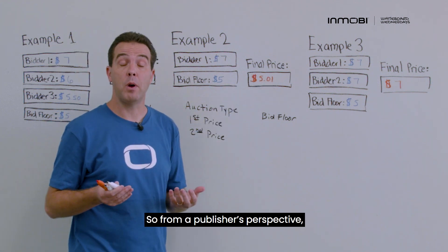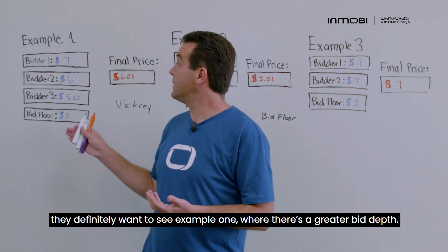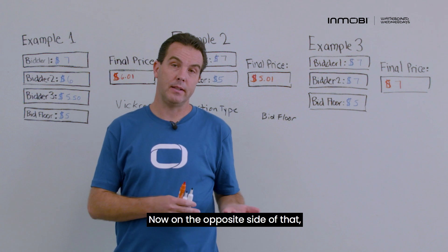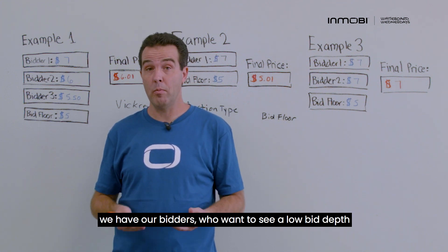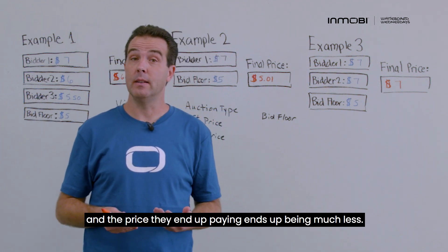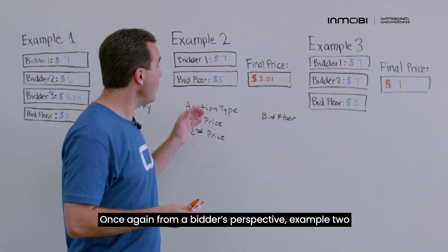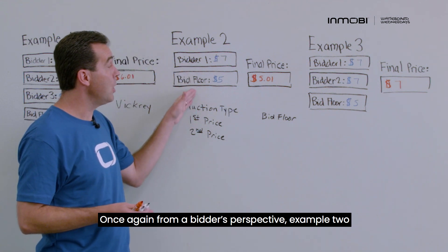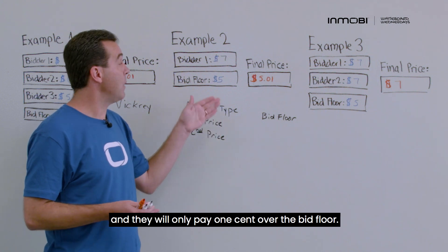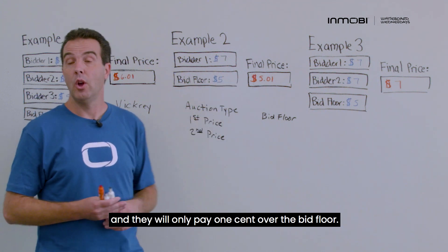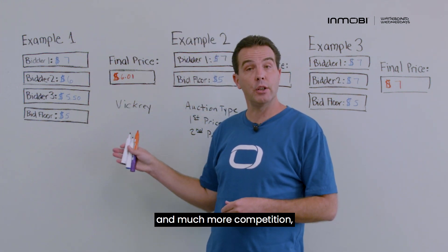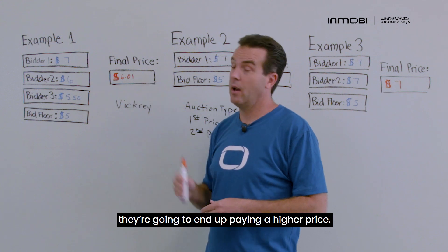From a publisher's perspective, they definitely want Example One with greater bid depth. On the opposite side, bidders want low bid depth because it's less competitive and the price they end up paying is much lower. From a bidder's perspective, Example Two is the better option — they're the only one bidding and pay just one cent over the bid floor. Whereas in Example One, with much greater bid depth and more competition, they end up paying a significantly higher price.